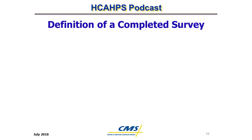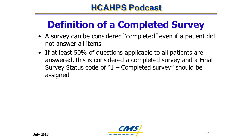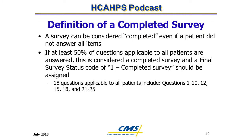Definition of a Completed Survey. A survey can be considered completed even if a patient did not answer all the items. If at least 50% of the HCAHPS survey questions applicable to all patients are answered, it is considered a completed survey and a final survey status code of 1 (completed survey) should be assigned. There are 18 questions that count towards this 50% threshold, including questions 1–10, 12, 15, 18, and 21–25.